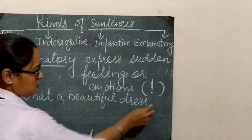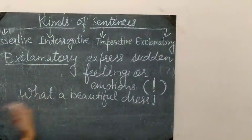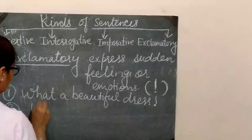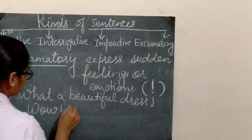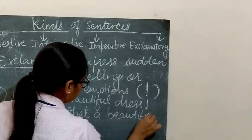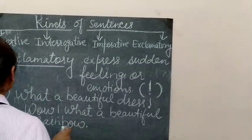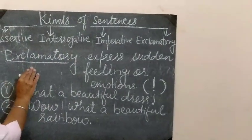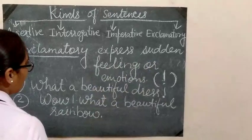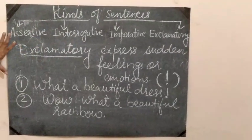Here I put an exclamation mark — not a full stop — because this sentence is showing sudden feeling. So sentences that express sudden feelings or emotions are called exclamatory sentences. I have now explained all four kinds of sentences.